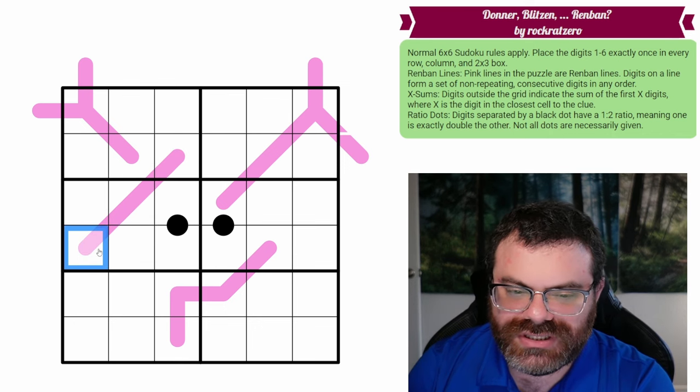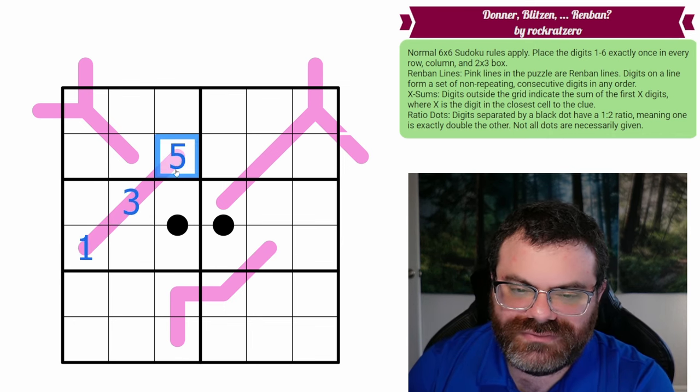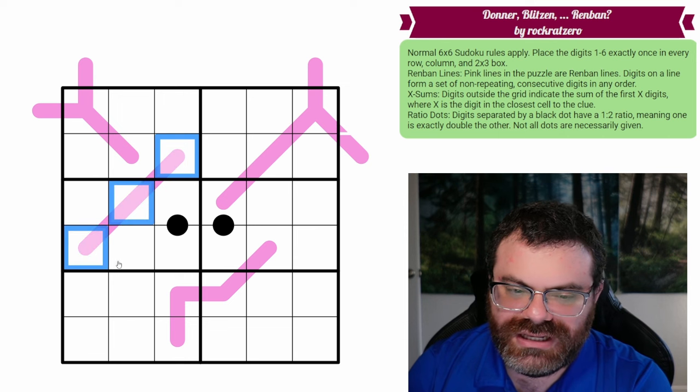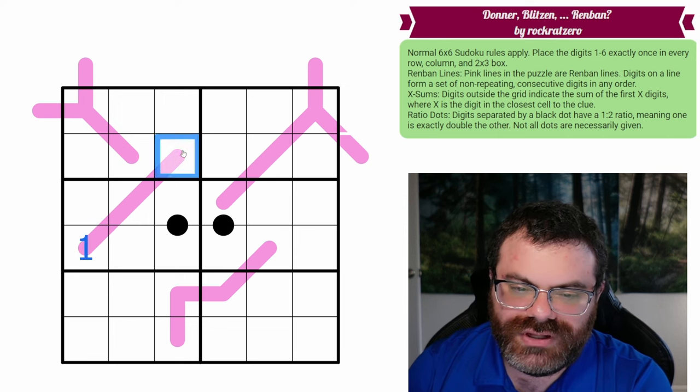So we can't repeat digits. We can't do like 1, 3, 5. We can't do 1, 3, 4. These aren't consecutive, but 1, 2, 3 would be fine.